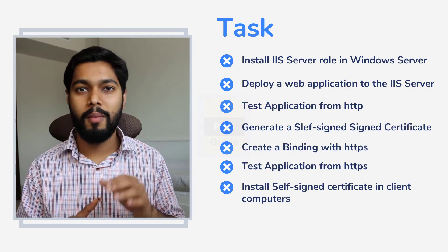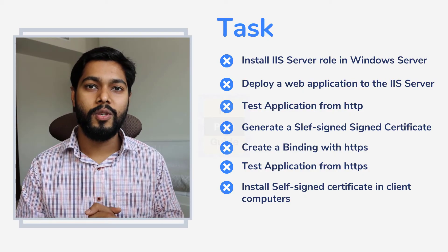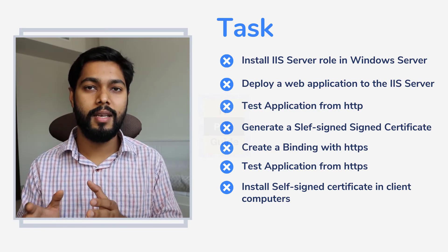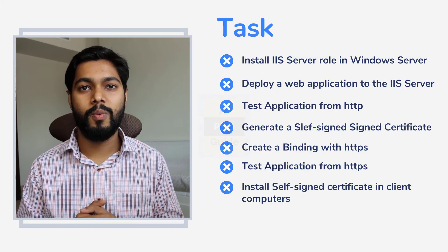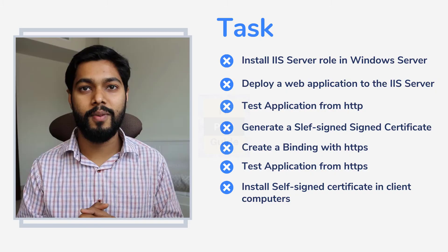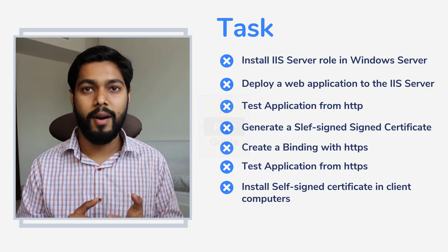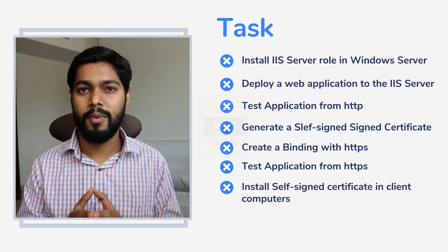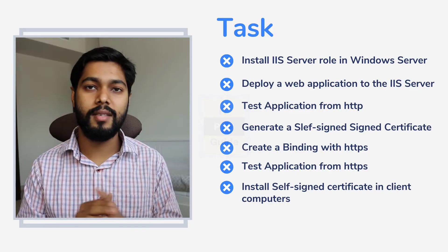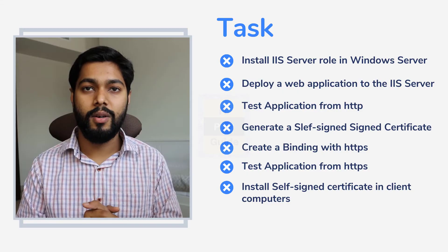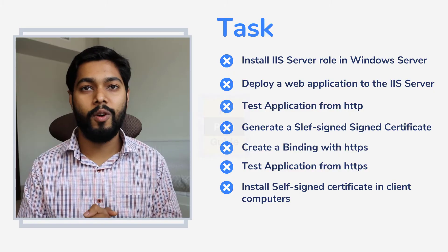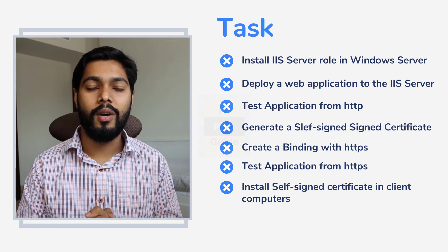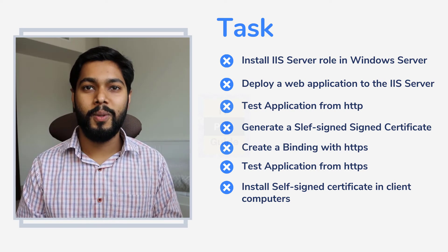Once you have a web application, we can prepare an IIS server and then deploy it. We will test how we can deploy and access it over HTTP and also HTTPS. For HTTPS we need a certificate, so we will generate a self-signed SSL certificate and see how to bind it and make it work. You can also purchase a certificate, but self-signed is the best choice for a development or test environment because you don't need to pay for it until you go to production.